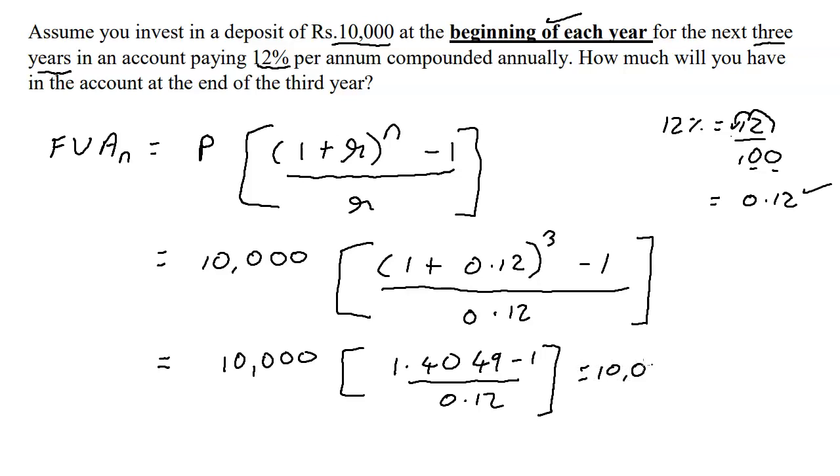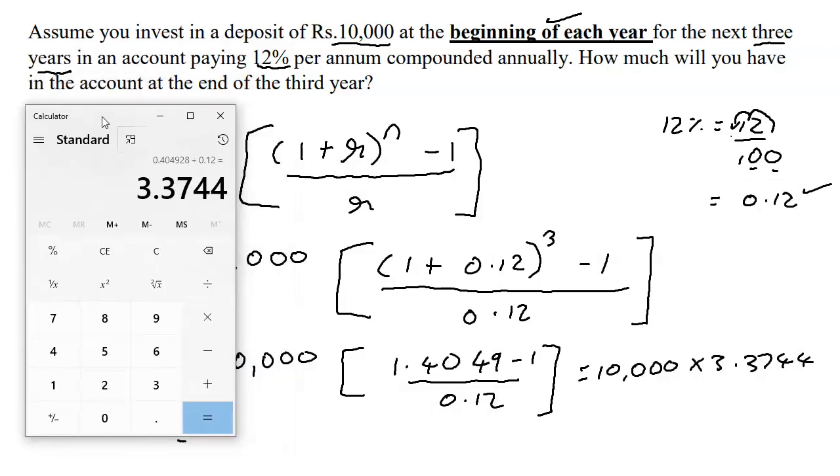I'm going to do minus 1 equals this, divided by 0.12, which gives us 3.3744. So 10,000 into 3.3744, and because we're multiplying this with 10,000, we're actually going to need the decimal places. Normally when we have a rupee answer, up to two decimal places would be preferable.